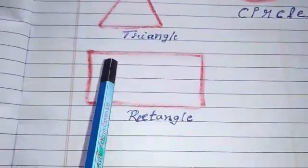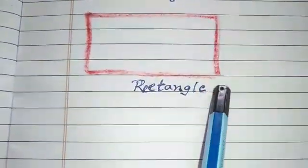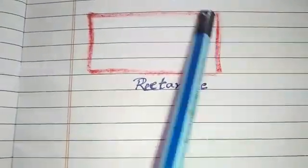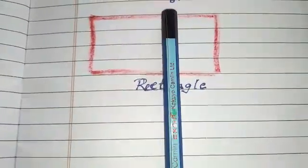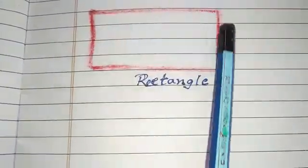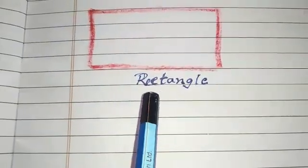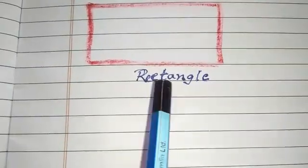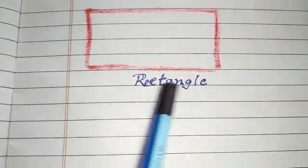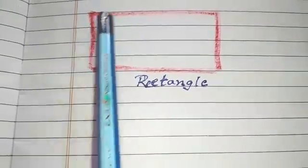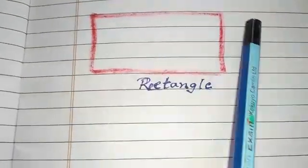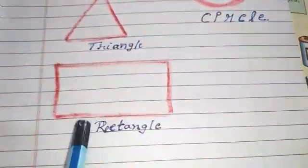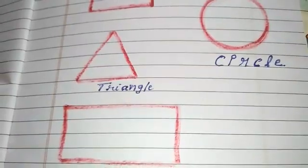Then comes rectangle, which is similar to square but a little wider. Rectangle — R-E-C-T-A-N-G-L-E. This is called rectangle shape. These are the shapes. Thank you children.